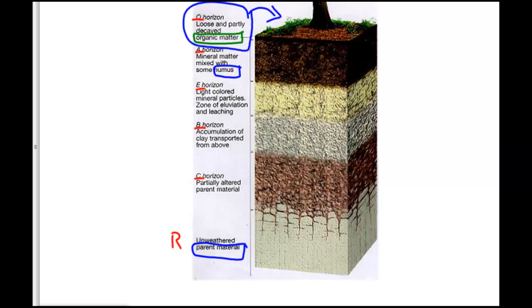The A horizon is a mineral layer mixed with that partially decomposed organic layer from the top. That is the characteristic soil we see around this area that is real dark. The dark color indicates lots of organic matter. That's what we think of as the topsoil.